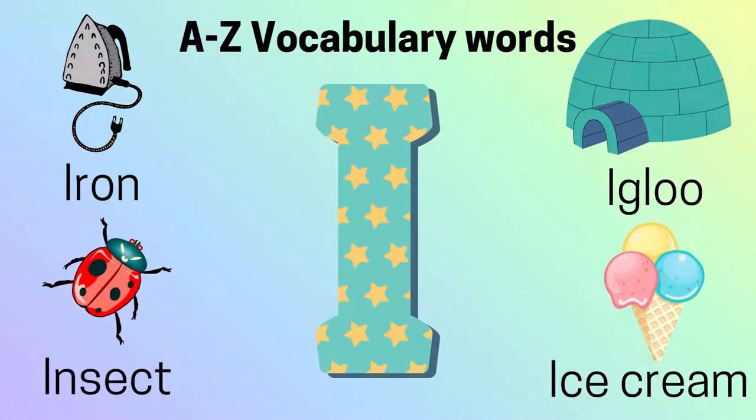Letter I. I-R-O-N, Iron. I-N-S-E-C-T, Insect. I-G-L-O-O, Igloo. I-C-E-C-R-E-A-M, Ice Cream.